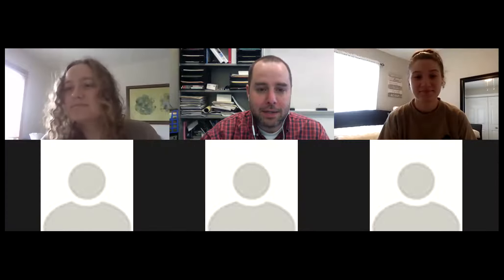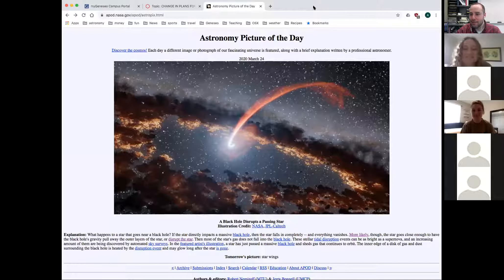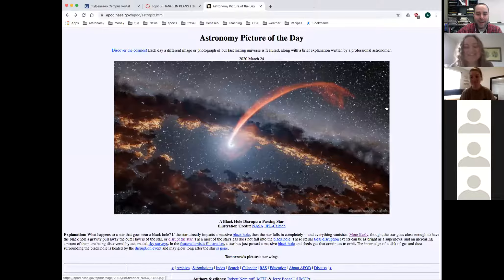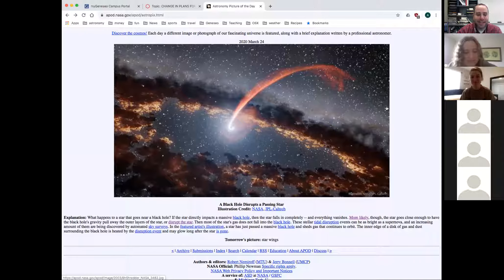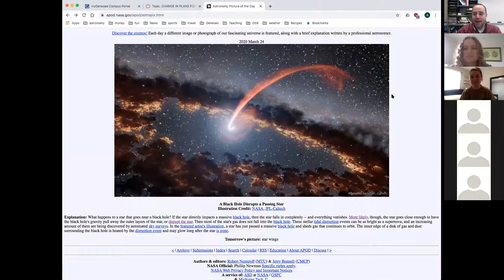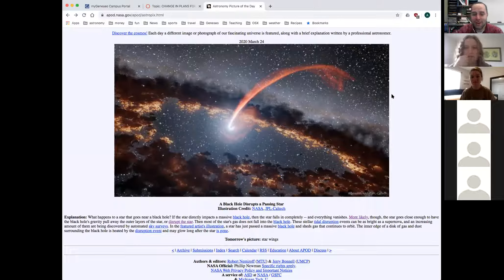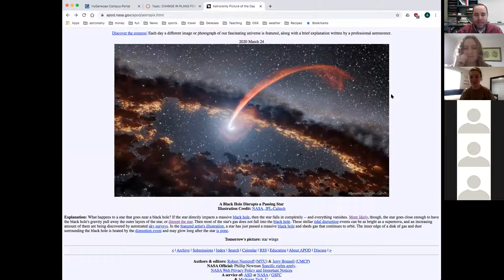I'm sharing my screen. Are you seeing the astronomy picture of the day now? Excellent. So today's astronomy picture of the day: a black hole disrupts a passing star. What's going on here? This is obviously, maybe it's not obvious, this is not an actual image taken by a telescope. This is an artist's conception of what might be happening. We haven't talked about black holes, but it's coming in the next couple of weeks.